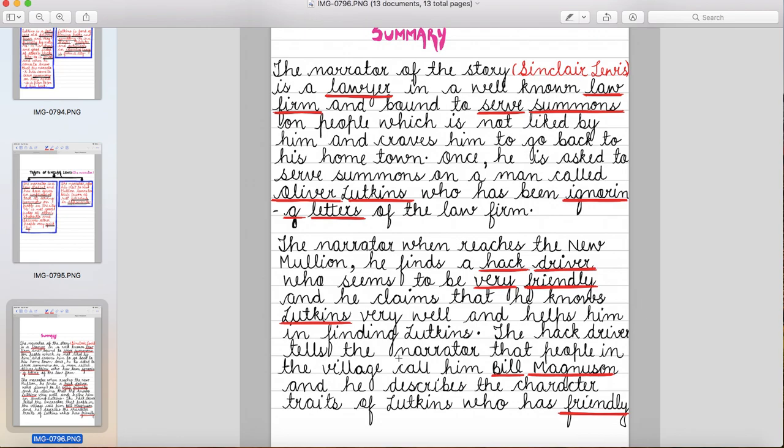The narrator when reaches the New Mullion, he finds a hack driver who seems to be very friendly and he claims that he knows Lutkins very well and helps him in finding Lutkins. Jaise hi New Mullion village mein pahunchte hai, unko kaun milta hai? Ek hack driver jo carriage chalata hai. Woh bahut friendly lagta hai and woh narrator ko bolta hai ki woh unki help karega Lutkins ko find karne mein.